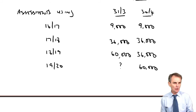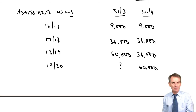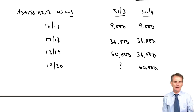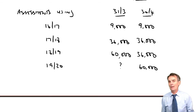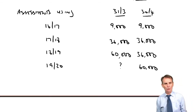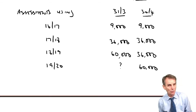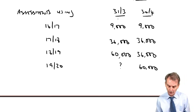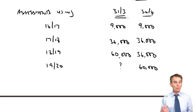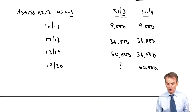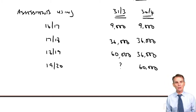Your first thoughts in making the call between March or April as your accounting date may have been about the level of overlap profits that would arise. You knew that if you chose 31st of March there would be no overlaps, whereas if you chose 30th of April that would maximise the overlaps at some 11 months worth of overlap period.